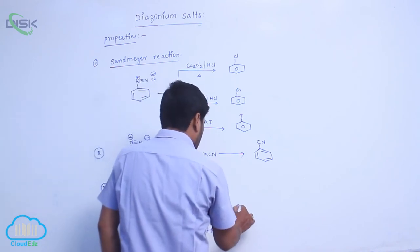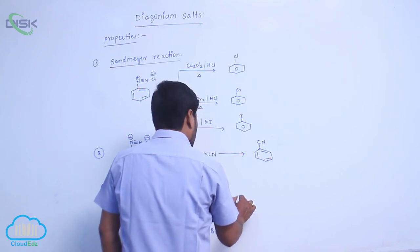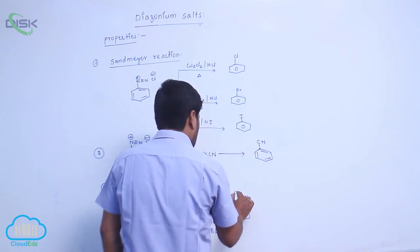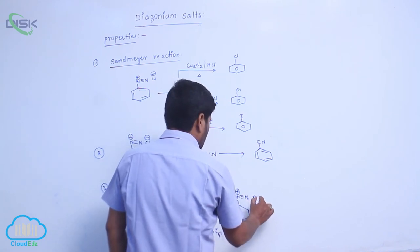Now it forms a salt. This is N triple bond N carrying positive charge. In this case, BF4 minus.